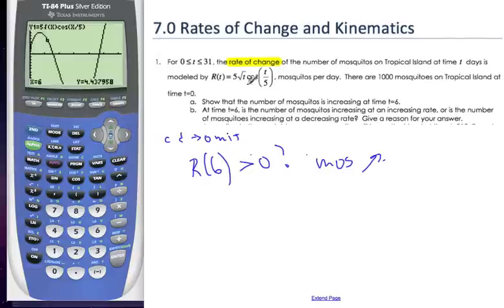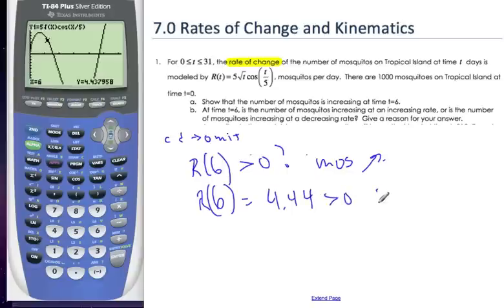So, r at 6 is equal to 4.44, which is bigger than 0. So, therefore, the mosquitoes are increasing. That's A part.